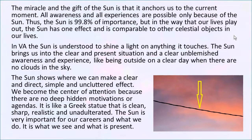So the Sun in your birth chart, when you're interpreting the Sun, it's not involved with deep, hidden motivations or agendas. People will say, 'Oh, Sun is in Scorpio, it's deep, it's interested in these hidden agendas.' We have a slightly different take on that in vibrational astrology. The Sun is not like that. The Moon and other planets can go into deep, hidden things. That's not what the Sun does. The Sun is the light of day. It's like a Greek statue — clean, sharp, realistic. It's like a photograph. Unadulterated.